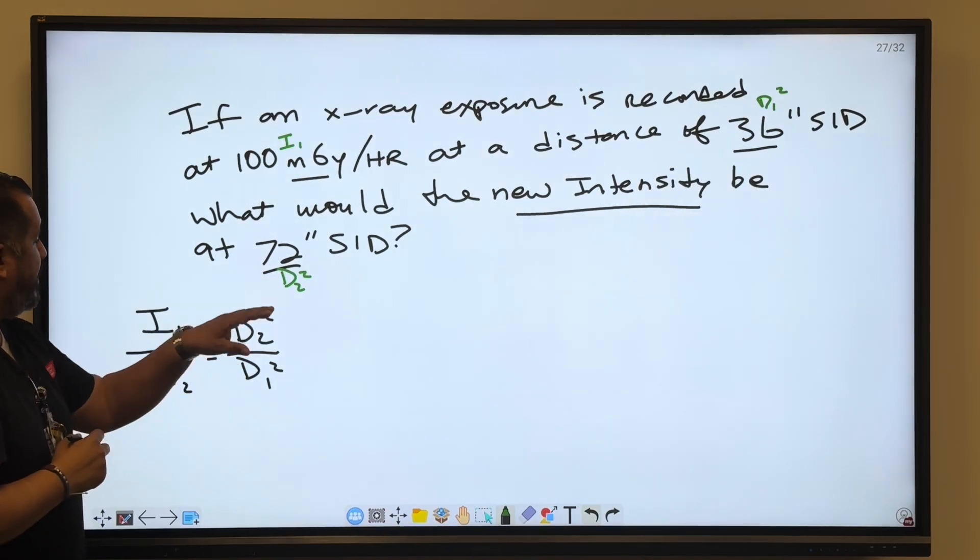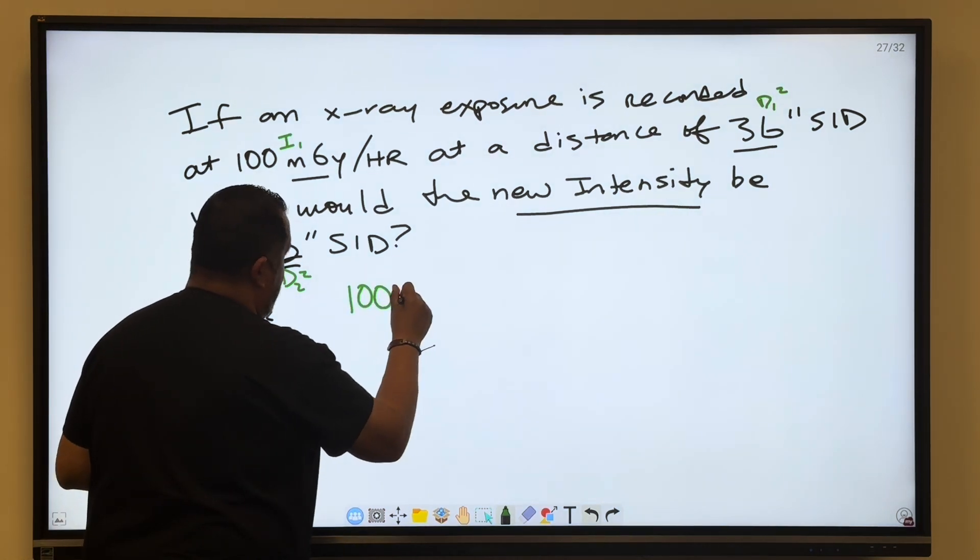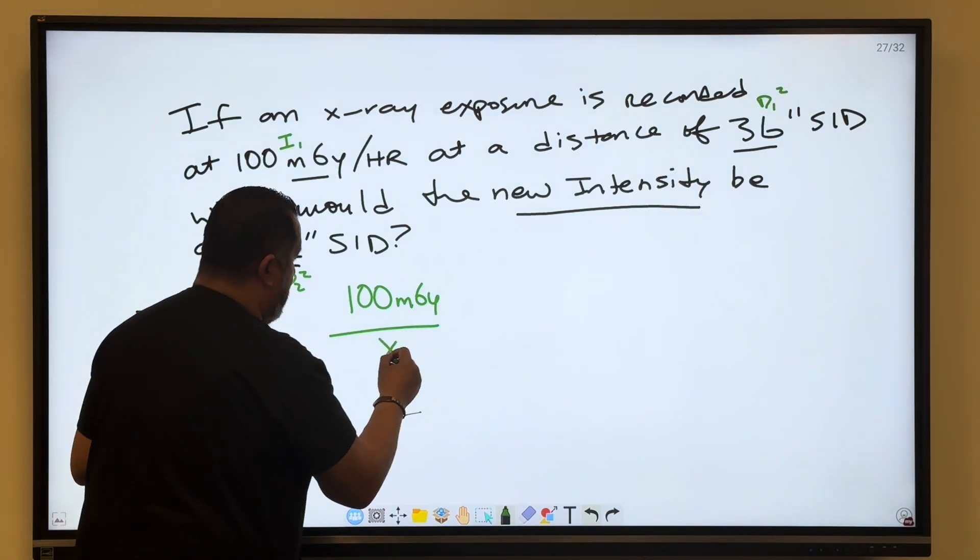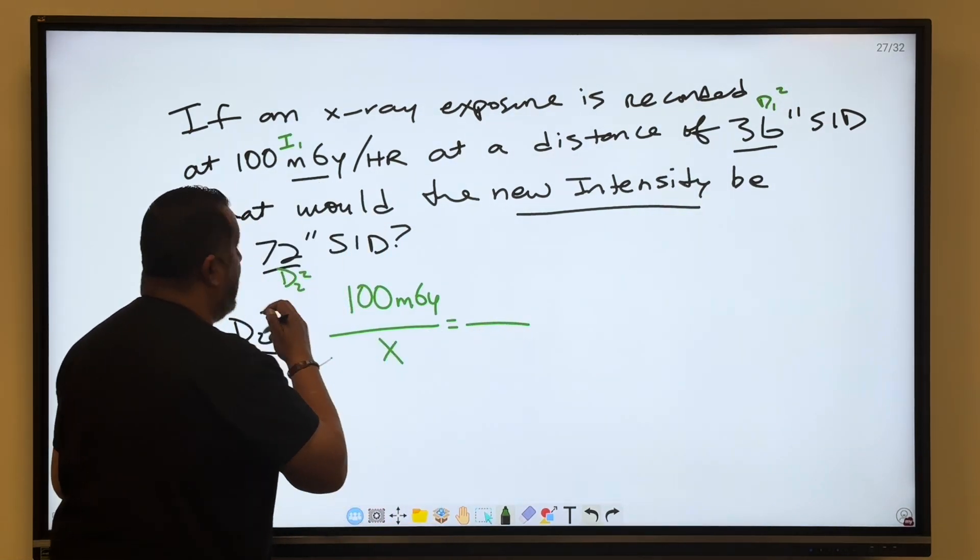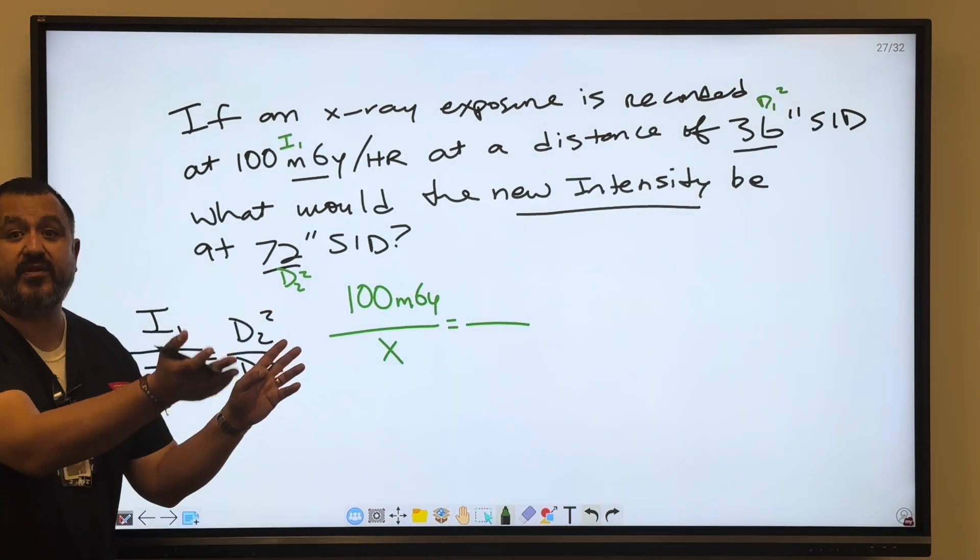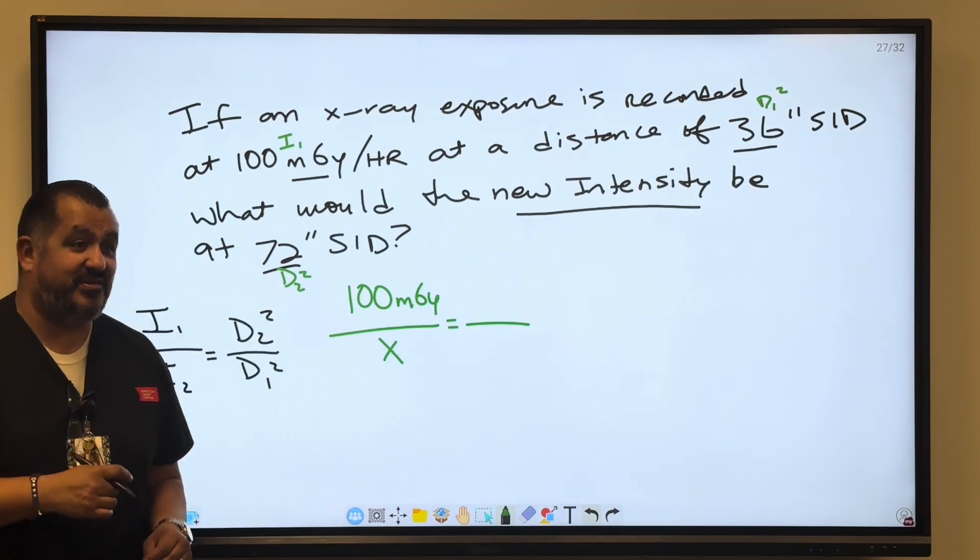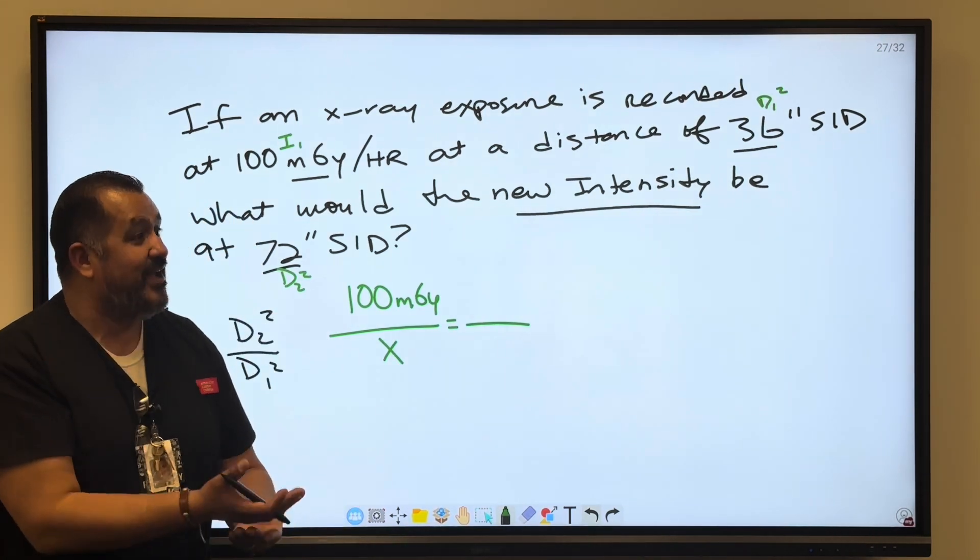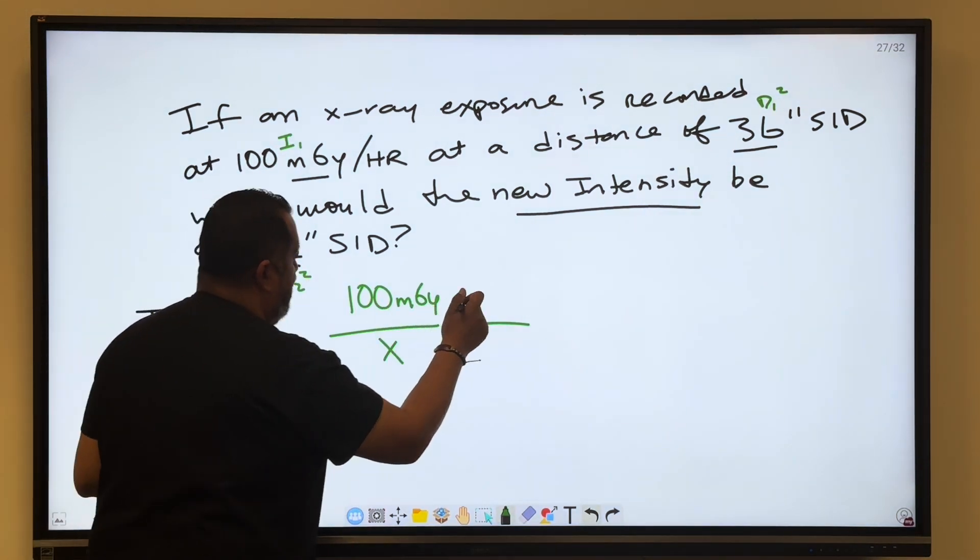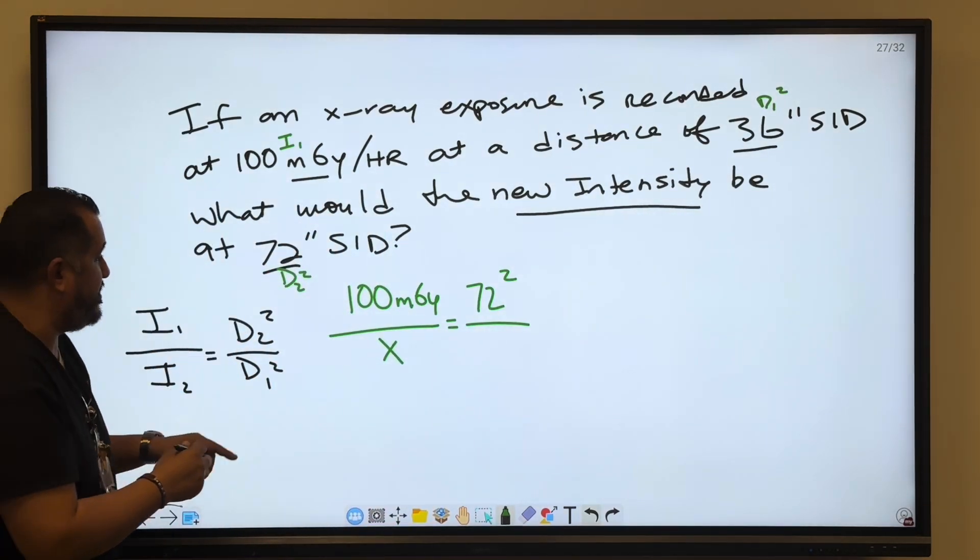Now we're going to plug in these numbers. We have I1, that's 100 milligray. We don't have the new intensity, that's what we're going to have to solve for. Then we have the new distance squared. Be careful because people flip it and they'll purposely put the wrong answer on the multiple choice because you inverted the distances. D2 squared is 72 squared and then we got 36 squared, that's D1.